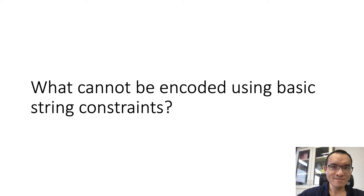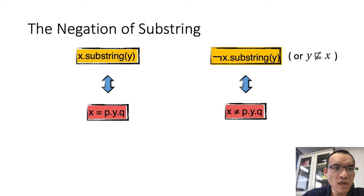However, we can still find many operations in programming languages that are not expressable with basic string constraints. The negation of substring operations is one of the most important operations that are not expressable with basic string constraints.